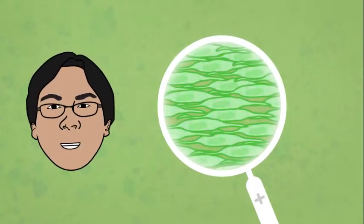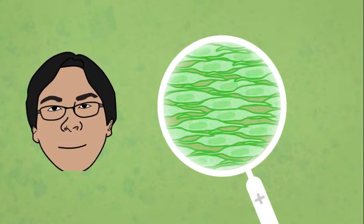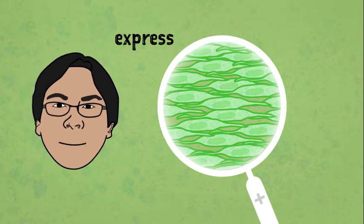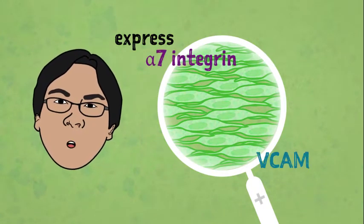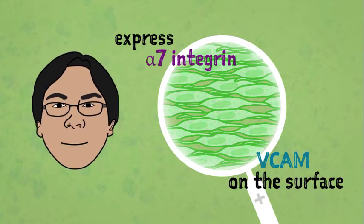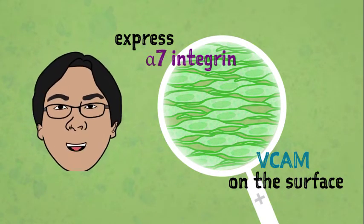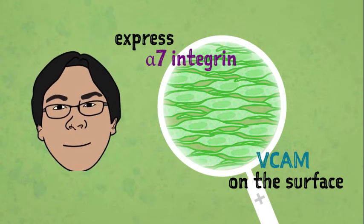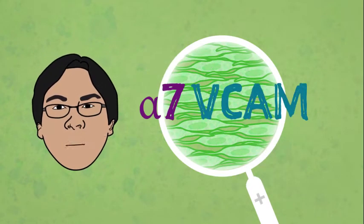And indeed, we find that teratomas harbor a good amount of them. These cells express the proteins alpha-7-integrin and VCAM on their surface, and we can use these proteins as markers to separate the skeletal muscle cells from the rest of the cells in the teratoma. We refer to them as alpha-7-VCAM cells.